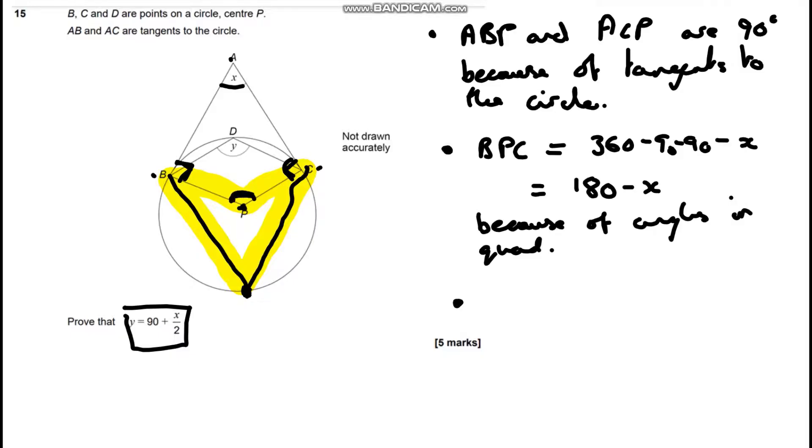What we know is this angle in here, BPC, is going to be double this angle here. Let's call this point E because we've got ABCD already. So BEC is going to be half of BPC, which is 90 take away half X. And this is because of angles at center theorem.